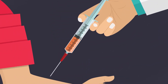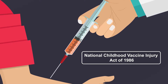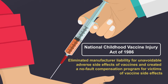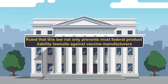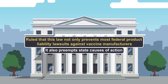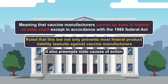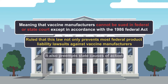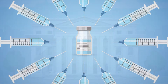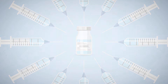An important manifestation of the way in which prescription drugs are treated is the National Childhood Vaccine Injury Act of 1986. That act eliminated manufacturer liability for unavoidable adverse side effects of vaccines and created a no-fault compensation program for victims of vaccine side effects, severely limiting the potential liability of vaccine manufacturers. In 2011, the Supreme Court ruled that this law not only prevents most federal product liability lawsuits against vaccine manufacturers, it also preempts state causes of action, meaning that vaccine manufacturers cannot be sued in federal or state court except in accordance with the 1986 Federal Act. This rule was passed to stabilize the vaccine market, which had been adversely affected by vaccine-related mass tort litigation.